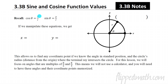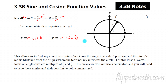What I'm going to do now is solve each formula for x and y. Multiplying both sides by r in the cosine formula, we get x = r times cosine of theta. Doing the same with the sine formula, we get y = r times sine of theta. So if we have a circle, we multiply the radius times the cosine or sine of the angle to get the x and y coordinates of the intersection point.